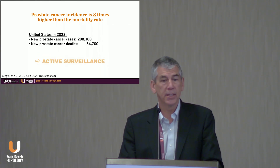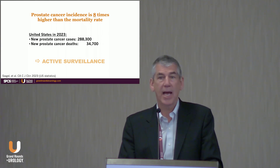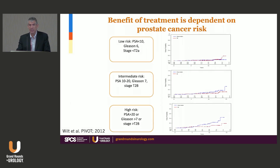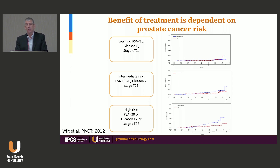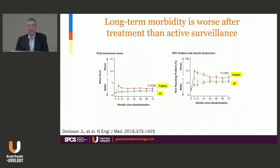This is where active surveillance comes into consideration. Most of us in practice have active surveillance patients or refer them to someone who manages it. There are studies supporting active surveillance primarily in the low-risk population. This is long-term data from the PIVOT trial — treatment with radical prostatectomy versus no treatment at all — not even a true active surveillance population. In the low-risk group, treatment provided no benefit at all. Laurie Klotz and his group in Toronto have confirmed that low-risk prostate cancer patients are primarily managed with active surveillance.